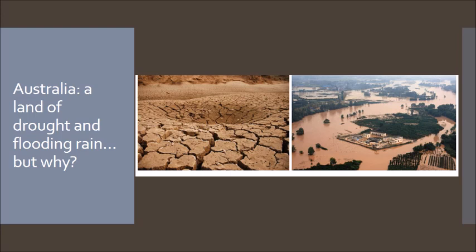We all know that Australia is a land of drought and flooding rain. We grow up in this country knowing that some years it's really dry and other years there are floods, and we know that Australia's climate changes so dramatically. We're going to look at the reasons that from year to year Australia's climate varies hugely — and this doesn't happen everywhere in the world.